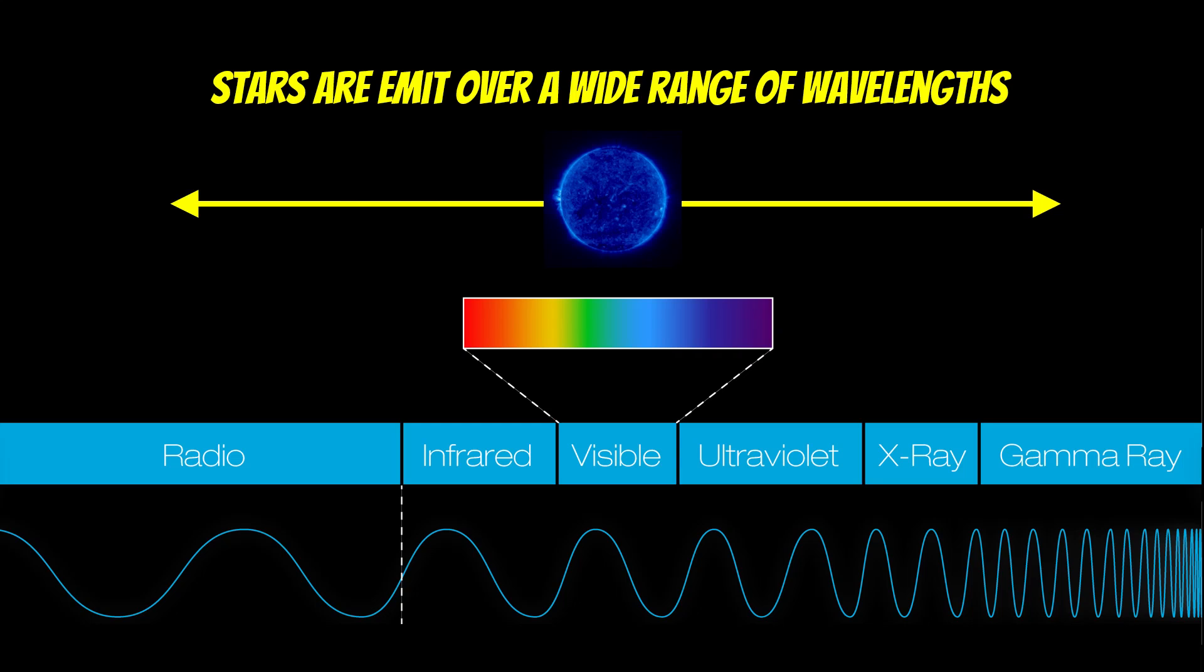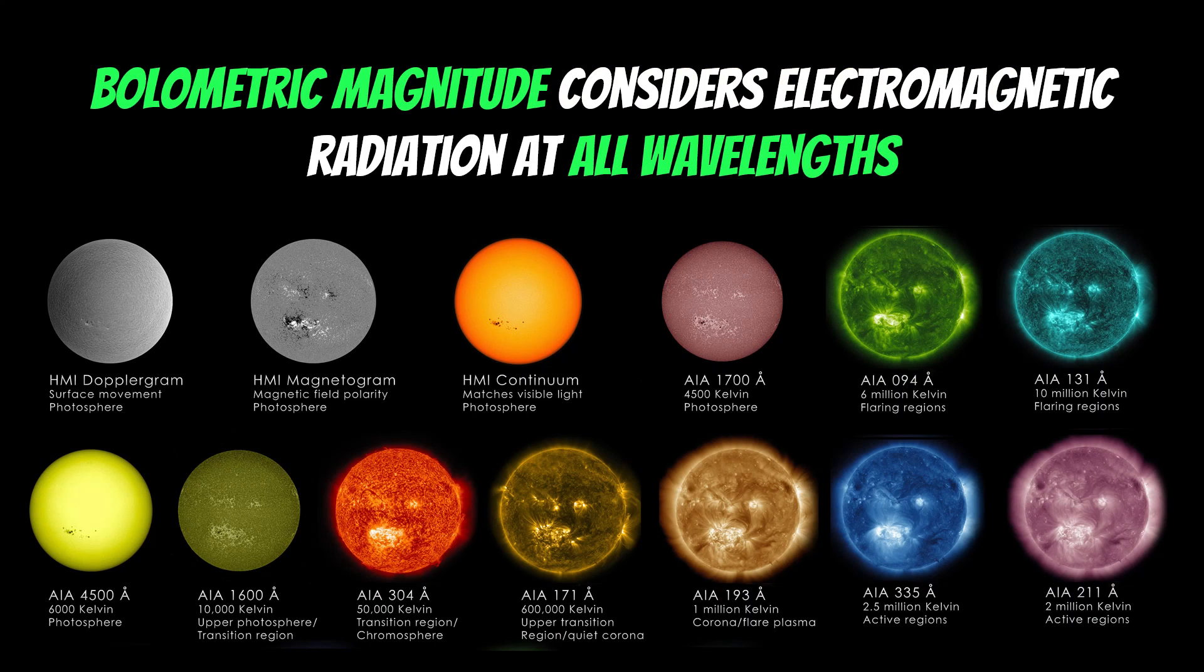And just to put that into context of our own sun, if we look at all the different wavelengths that we can measure, this is just a few actually, you can see that it looks very different in each wavelength that you look at. And that's because you're looking at a slightly different part of the sun. So different layers, really, different temperatures, so different energies involved here.